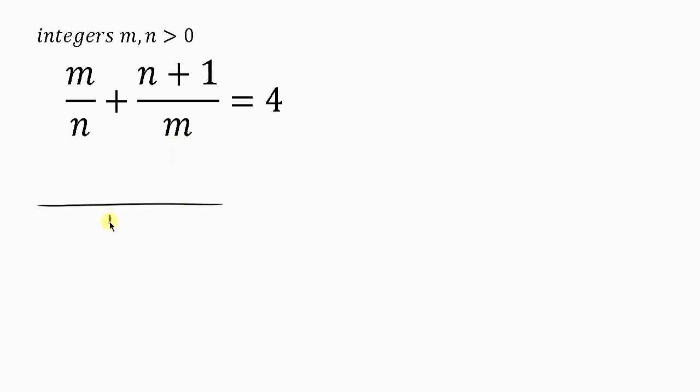Take the LCM of n and m, which is mn. So mn divided by n, I'm going to be having m. So m times m is m² plus mn divided by m, I'll be having n. So n times (n+1), that's n(n+1) is equal to 4.